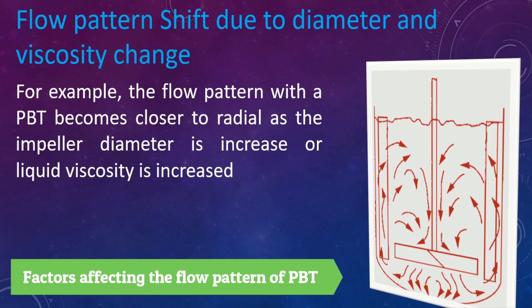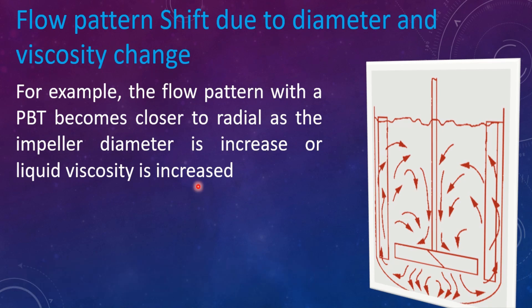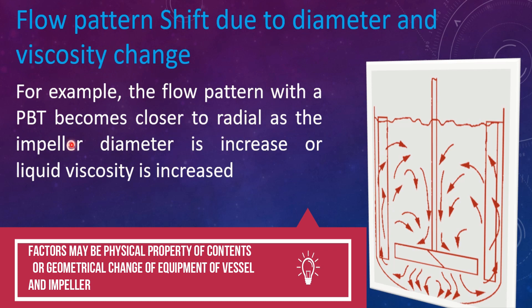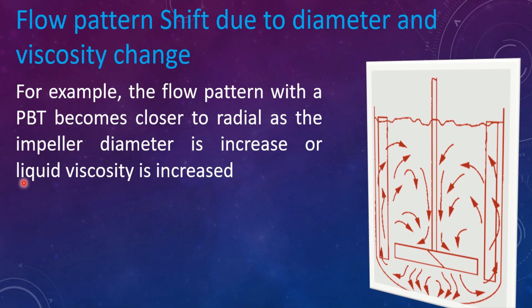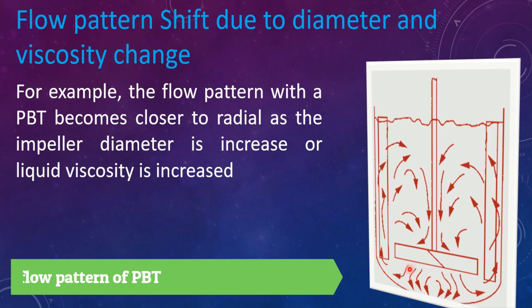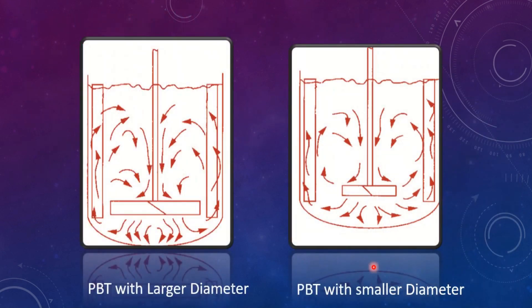The next factor which affects the flow pattern produced by the pitched blade turbine is impeller diameter. For example, the flow pattern with the PBT becomes closer to radial as the impeller diameter is increased, resulting in a lower axial component with more concentration at the bottom of the liquid. Comparing a larger diameter PBT with a smaller diameter PBT, we can see that the larger diameter produces broken or incomplete loops, meaning the axial component is reduced and the radial component is increased, while a smaller or reasonable diameter produces complete loops as seen in the simulation.